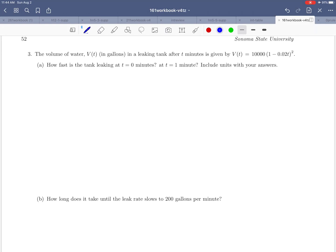Hello everybody and welcome to exercise 3 on page 52 of the workbook. Let's take a minute just to read this question together. The volume of water V(t) in gallons in a leaking tank after t minutes is given by V(t) equals 10,000(1 minus 0.02t) squared.